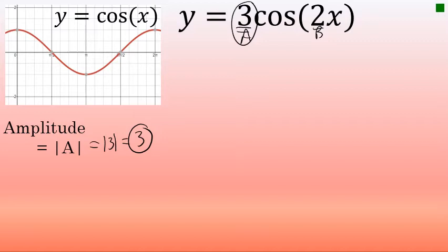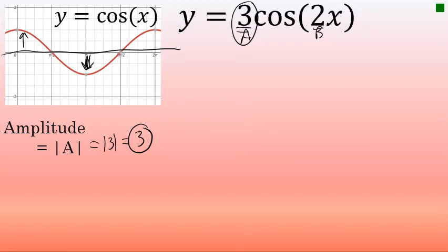Amplitude can be thought of as the height of the wave — how many units above and below the middle of the graph the wave will rise and fall. In this case, I'm graphing a cosine whose highest point is three units above its middle and whose lowest point is three units below its vertical middle.